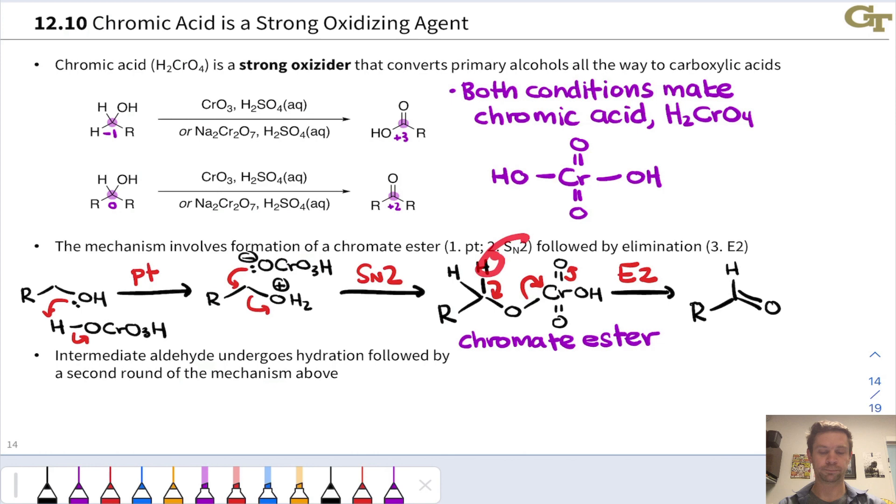I left out the base just to save a little bit of space, but probably water would be the base that would remove that proton under these strongly acidic conditions. The way we have it drawn here, it's akin to an E2 elimination, establishing the CO double bond.